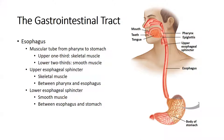The upper esophageal sphincter is skeletal muscle, giving you voluntary control over swallowing — this is between the pharynx and the esophagus, and you can decide whether or not to swallow. The lower esophageal sphincter is smooth muscle, between the esophagus and the stomach, and we don't have voluntary control over it. Food moves from the esophagus into the stomach based upon the peristaltic activity of the esophagus and the state of the stomach.